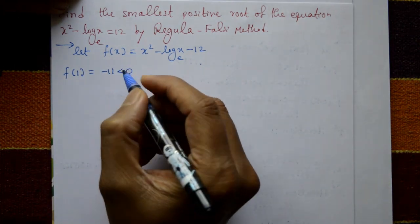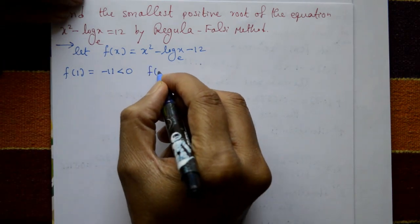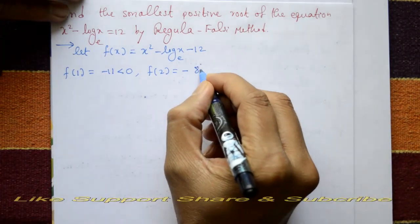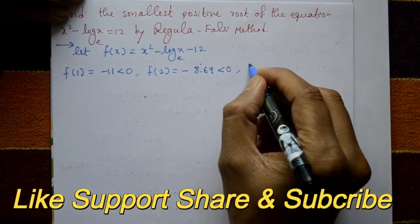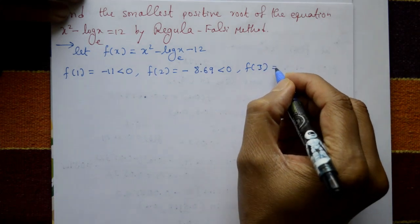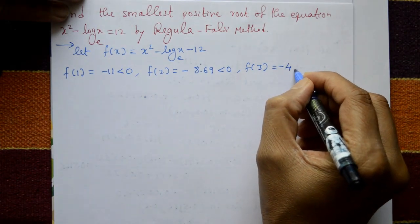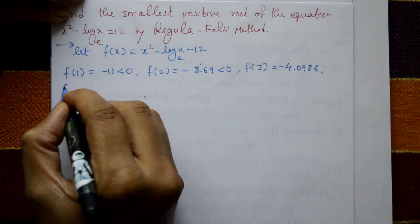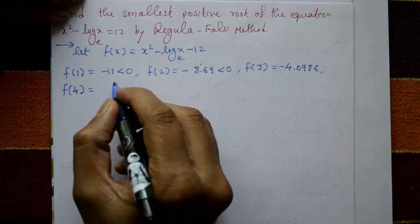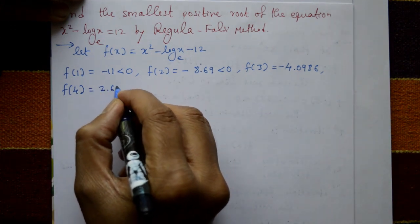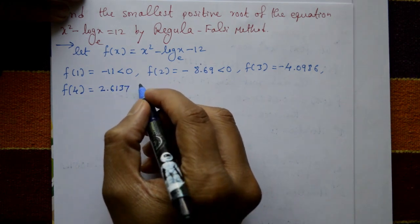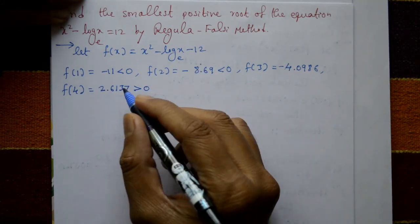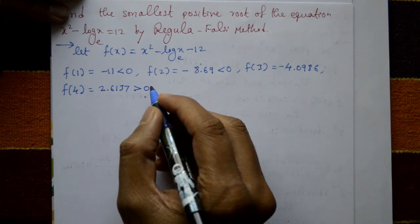f(1) = minus 11, which is less than 0. Put x equal to 2, you get minus 8.69, also less than 0. Put x equal to 3, you get minus 4.0986. Put x equal to 4, you get 2.6137, which is greater than 0.